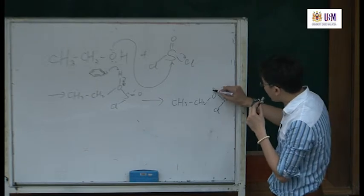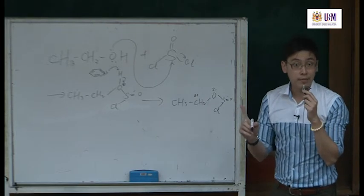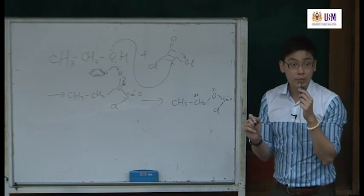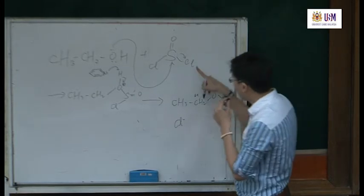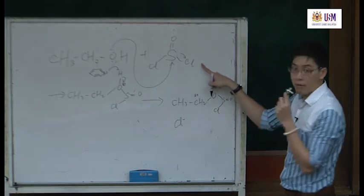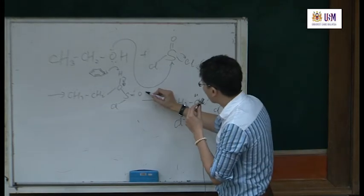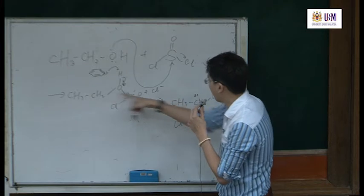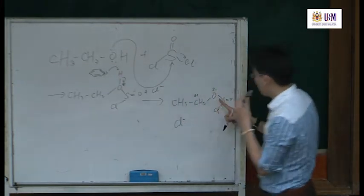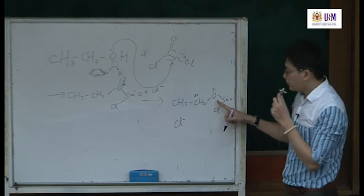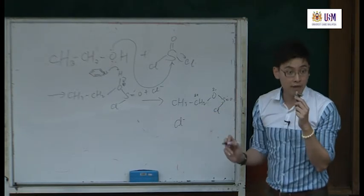Because this end is slightly negative and this carbon is slightly positive, and you have the chloride as a nucleophile — you have the chloride as nucleophile which comes out from here. So in this step you should write + Cl⁻ here. Write it properly. Then you come out with this intermediate.